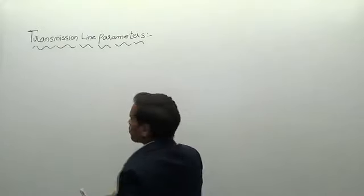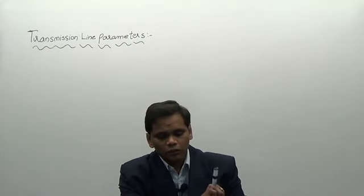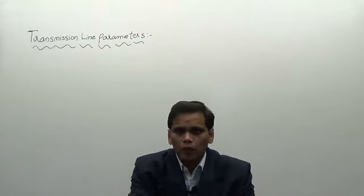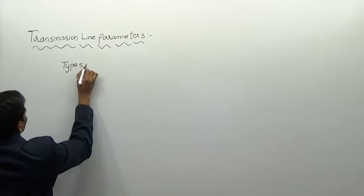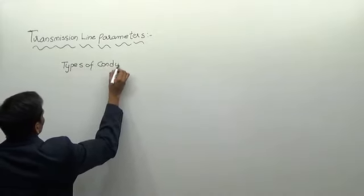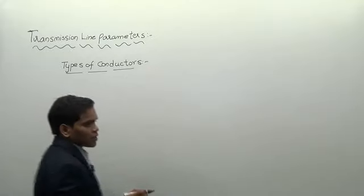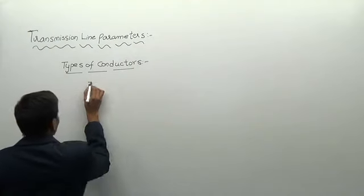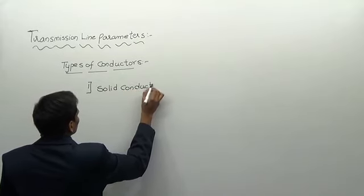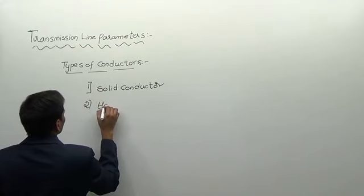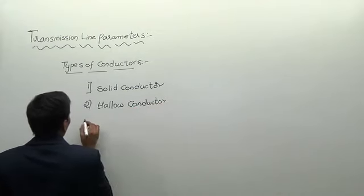Before going directly into the topic, I want to discuss the types of conductors which are used in transmission lines. Mainly we have three types of conductors: the first one is a solid conductor, the second is a hollow conductor, and the third is a stranded conductor.